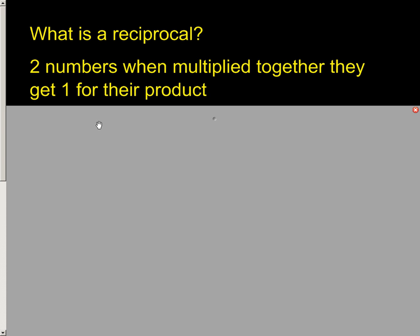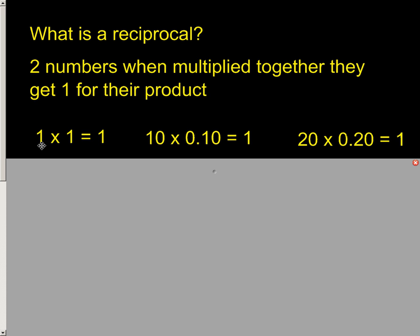Well, let's just show you some examples here real quick. If I take 1 and I multiply it by 1 again, we still get positive 1. So the reciprocal of 1 is 1. But if I take 10, what can I multiply by 10 to get their product to be positive 1? In this case, it's 1 tenth. So 10 times 0.10, or 10 times 1 tenth, would get you 1. 20 times 0.20 would get you 1. And so the reciprocal of 10 is 1 tenth. The reciprocal of 20 is 2 tenths.